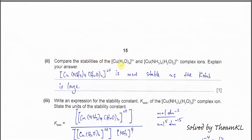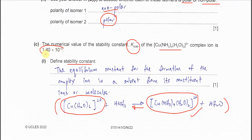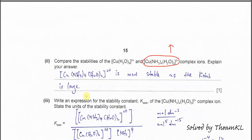Part two: compare the stability of the hexa aqua copper(II) ion and the tetraamine diaqua copper(II) ion. Because the Kstab value is greater than one and quite large, the tetraamine diaqua copper(II) ion is relatively more stable than the hexa aqua copper(II) ion. The larger the Kstab, the more stable the complex ion.